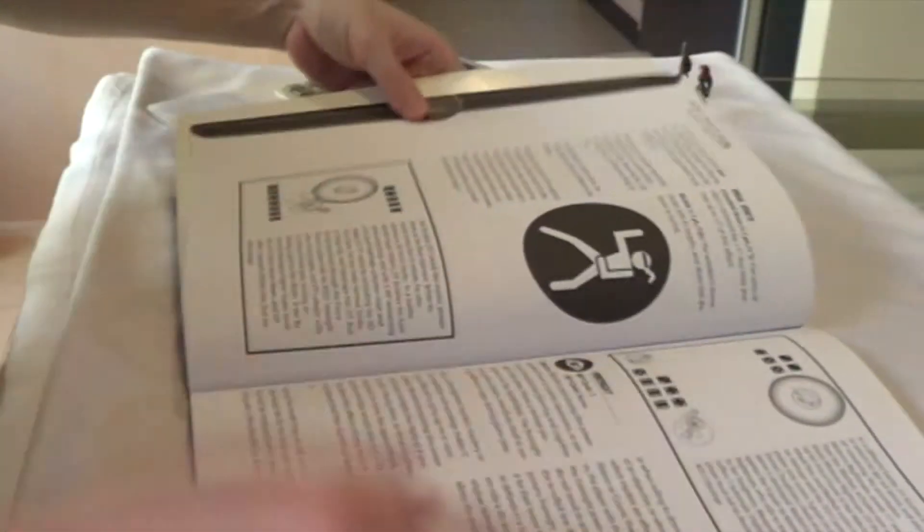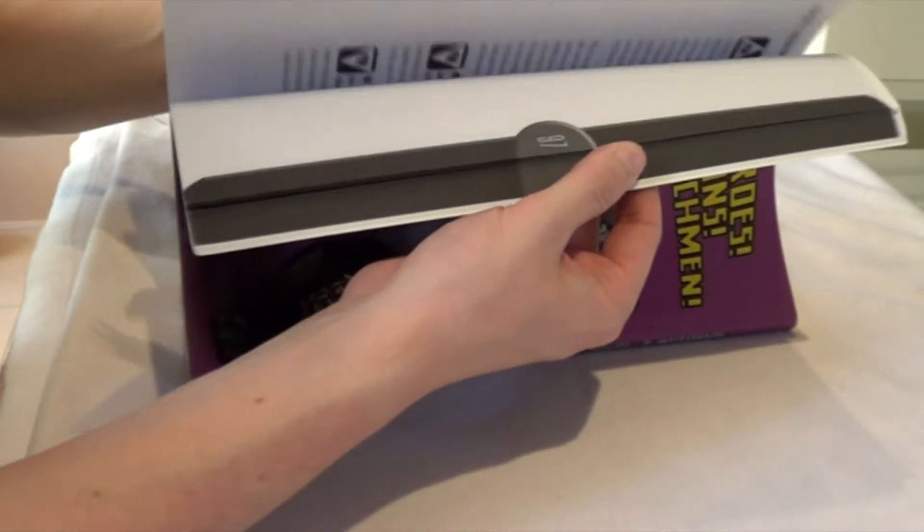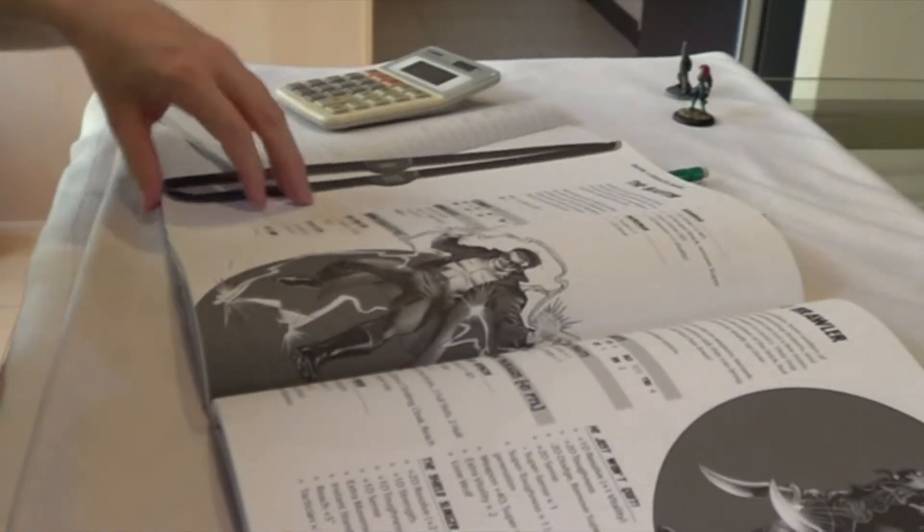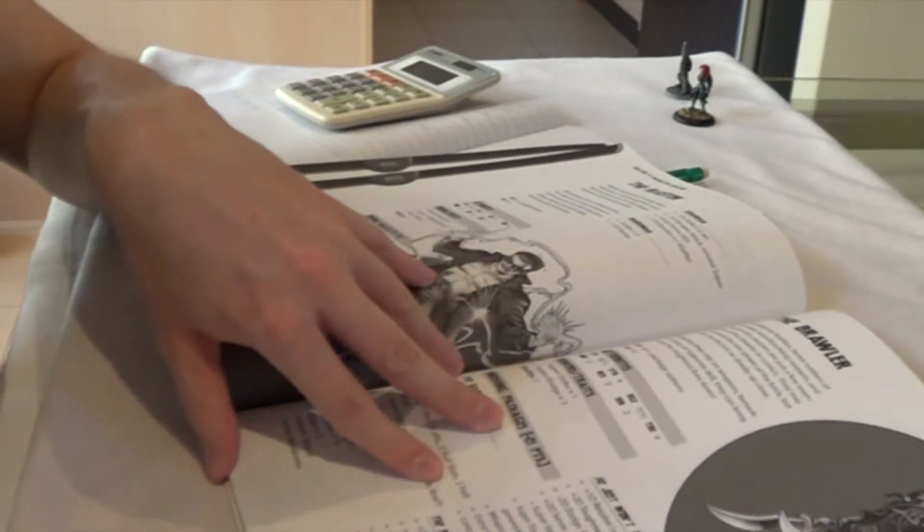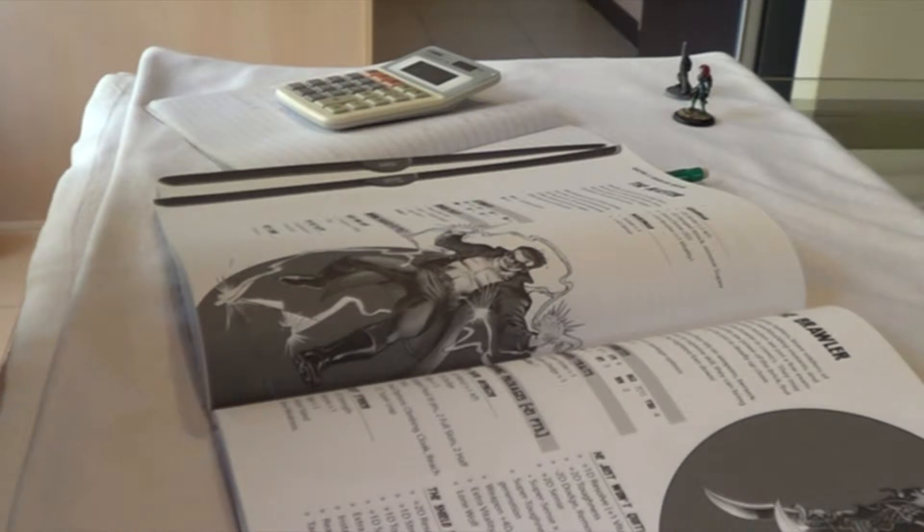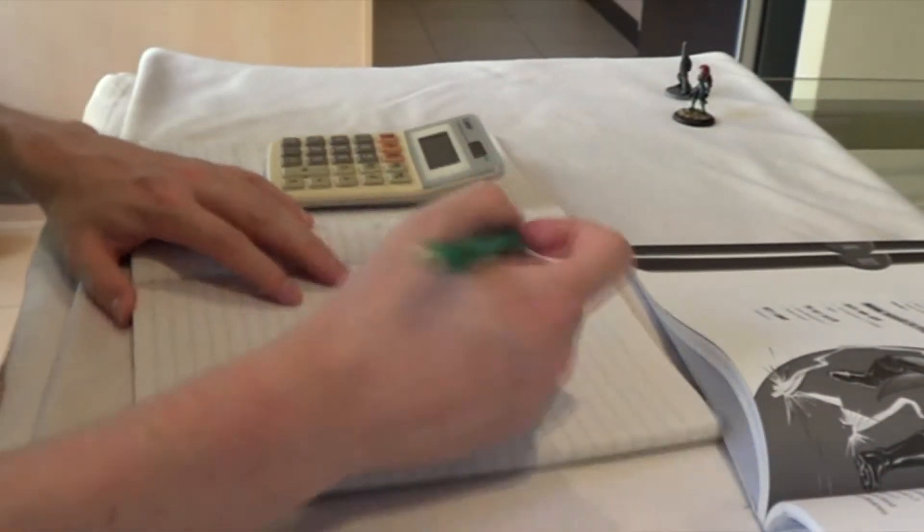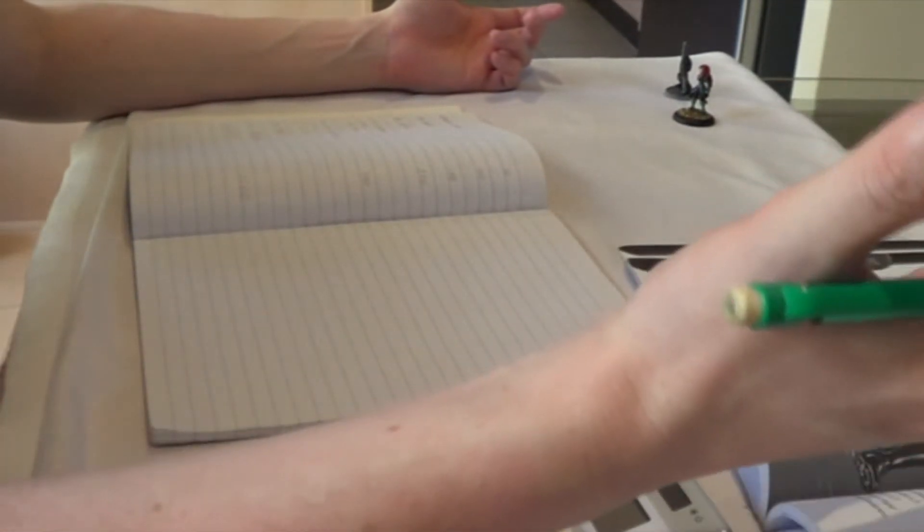Now a good way to get started is there are some example characters in the book, from page 102 onwards. These ones are set up to be 75 points, which is sort of the recommended starting point for a character. I personally find, unless you're going to do a campaign, an 85 point character works a little bit better, it just gives you more options to go with.